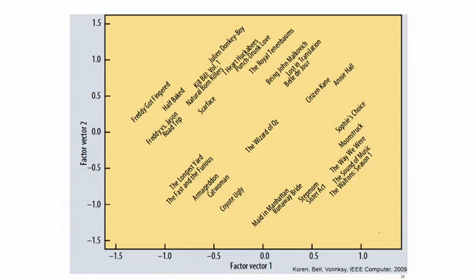If we actually go and do this on the Netflix challenge and obtain the latent factors, we can set k equals 2 — obtaining only two latent factors — and map movies into this latent space of two factors. Here is what we see: for example, Wizard of Oz is in the center of this recommender system, here are the bloody movies, in this part we get action movies, and so on. We see that similar movies get grouped together in similar parts of this abstract movie space.